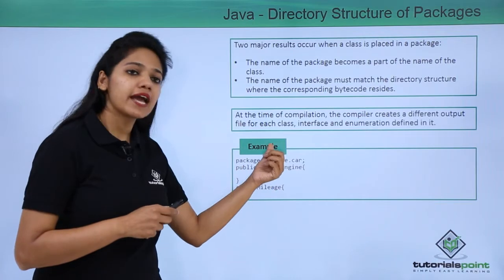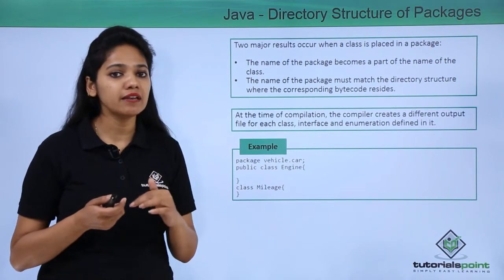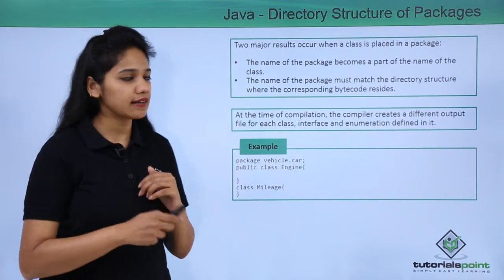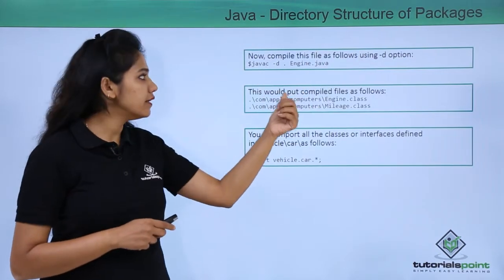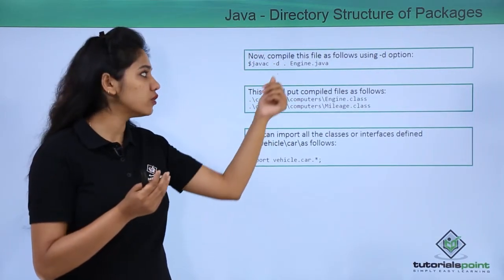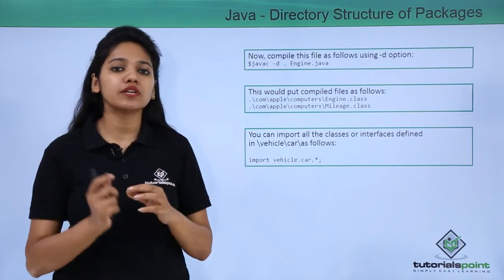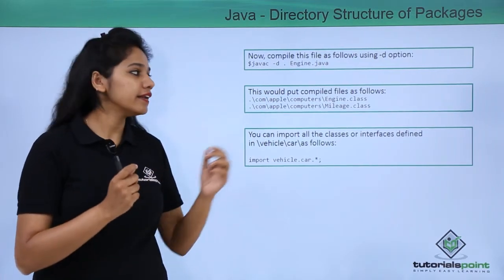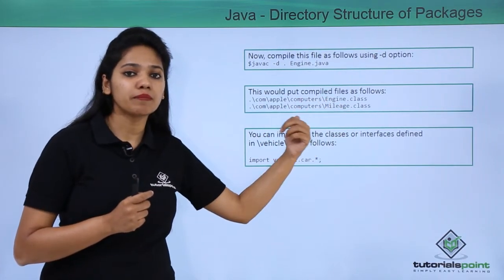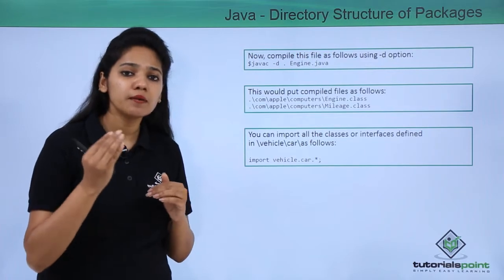We have a package called 'vehicle' and it has a car class in it. In that, we have created two other classes: engine and mileage. Now, in order to compile, we write 'javac -d .' because from the current package we are trying to compile the Engine.java file. When you compile this, it will create separate class files for each class — a different file for the engine class, a different file for the mileage class, and any other classes and interfaces created. Each is stored in a different place.